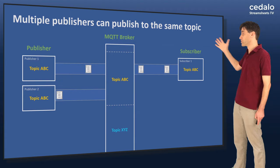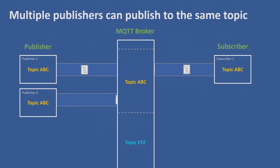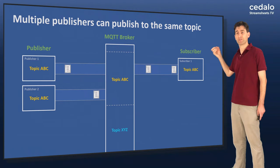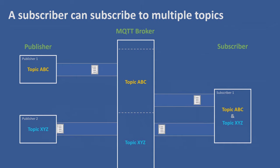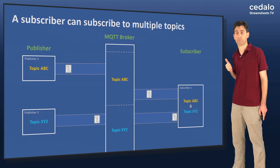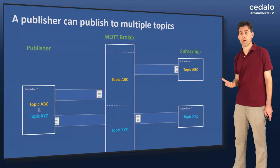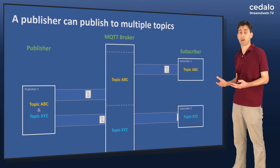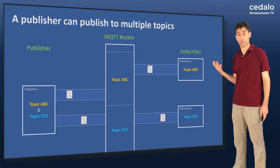We can also see the case where multiple publishers publish to the same topic — two publishers, a single subscriber — publishing at different time intervals so it's clear that the subscriber is receiving both messages. A subscriber can also subscribe to multiple topics: a publisher on ABC and a publisher on XYZ, with the subscriber listening to both topics and receiving all messages. The same thing happens in the opposite case as well. A client need not be just publishing or subscribing — it could publish on one channel and subscribe on a different channel. MQTT topics are extremely flexible, and you can do lots of things and make your life very easy.